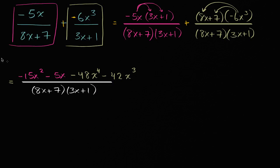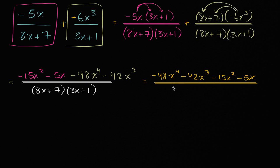Some of you might want to just write it in descending degree order. So you could write it as negative 48x to the fourth, minus 42x to the third, minus 15x squared, minus 5x. All of that over 8x plus 7 times 3x plus 1.